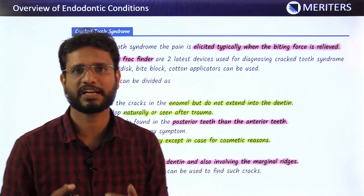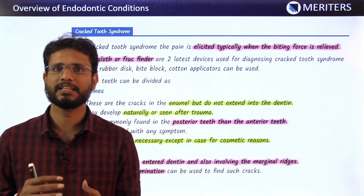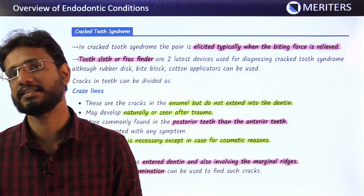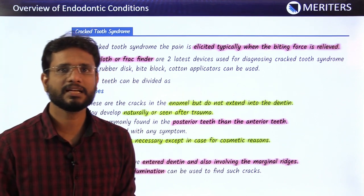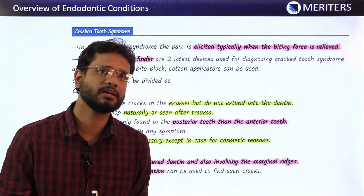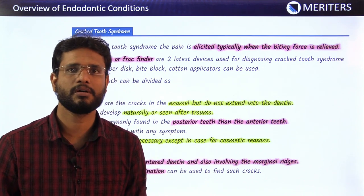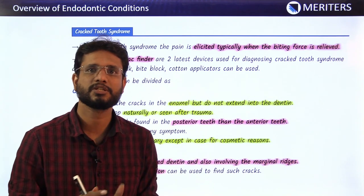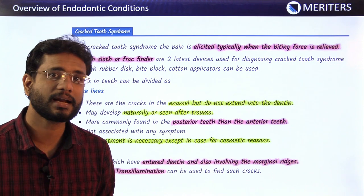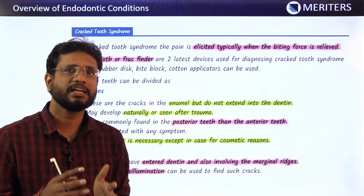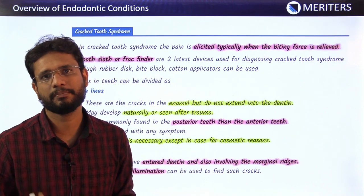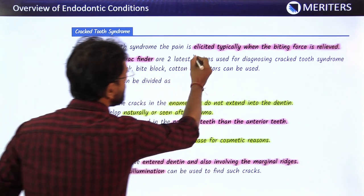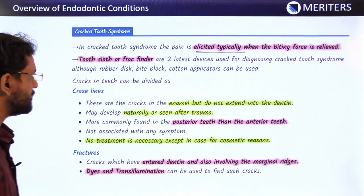This happens because there is a fractured tooth segment. When pressure is applied, the fracture segment flares away, increasing the volume of the pulp and decreasing pressure inside. When pressure is removed, the fracture segment returns to its original position, increasing the pressure in the pulp and stimulating the nerves, leading to pain. So the typical feature of cracked tooth syndrome is that pain is elicited when biting force is relieved.